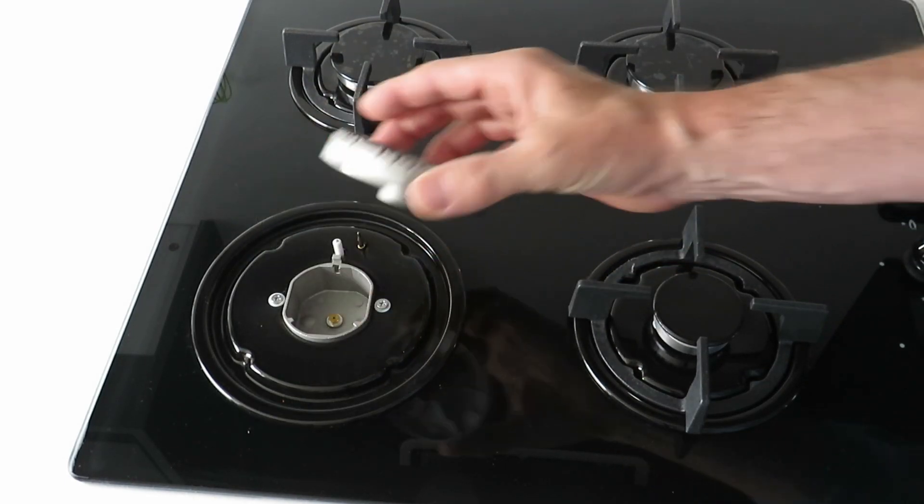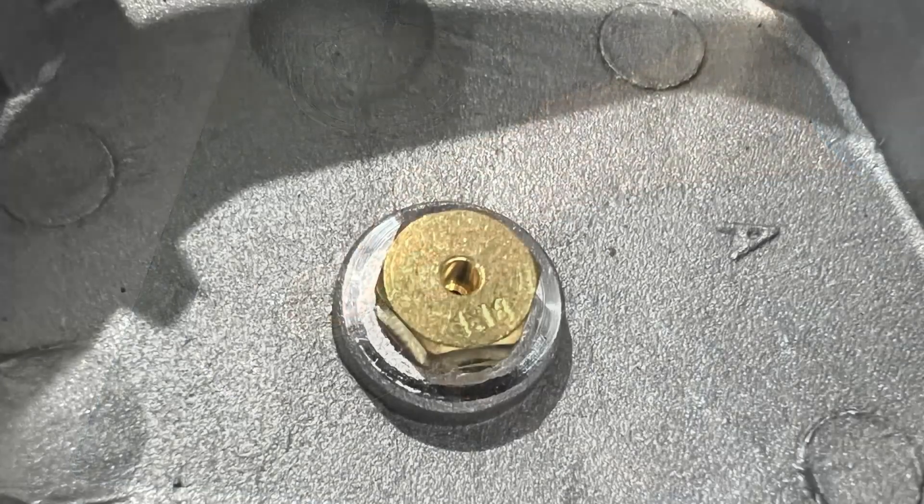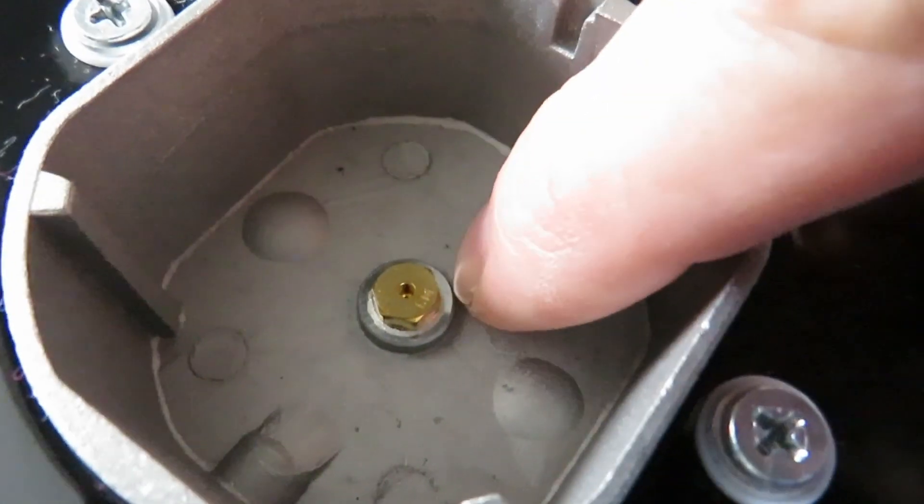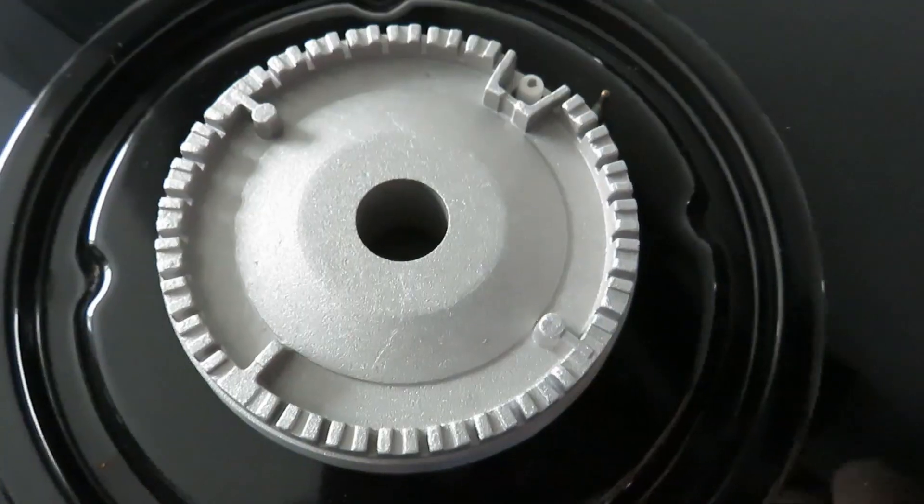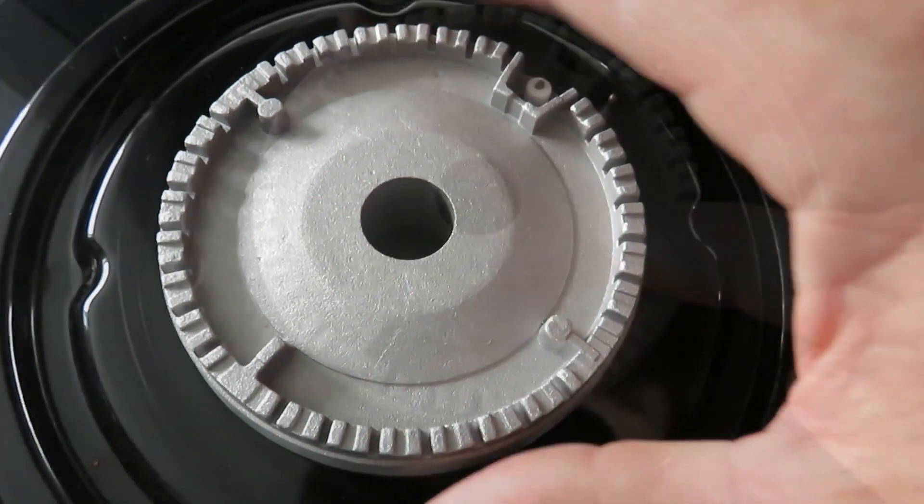If we lift this burner hob, you'll see inside that we have a gas injector. So the process is that the gas is fired up through this injector at quite a fast rate. It then comes up through the hole in the middle of the burner hob and it's mixed with air.